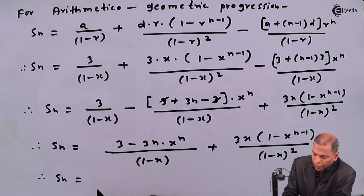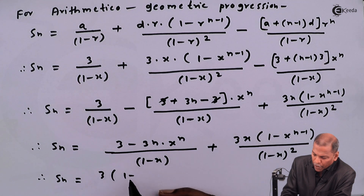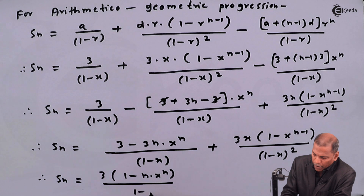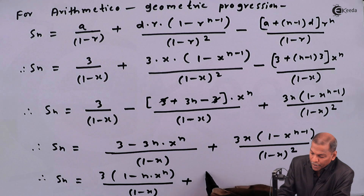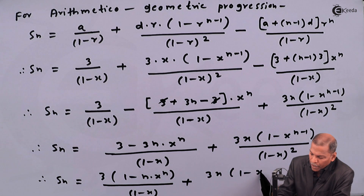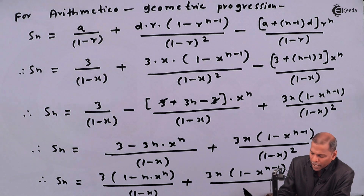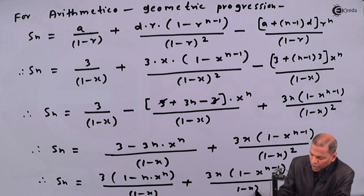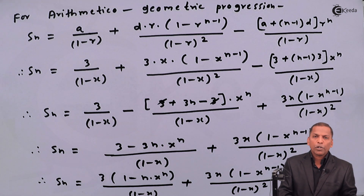Finally, S_n equals: from the numerator we can take 3 as common factor, so 3·(1 minus n·x^n) divided by (1 minus x), plus 3x·(1 minus x^(n-1)) divided by (1 minus x)². This is the required solution for the given problem. Thank you.